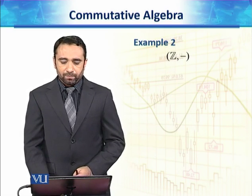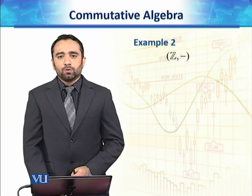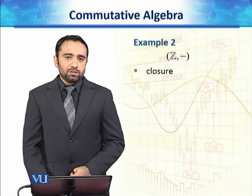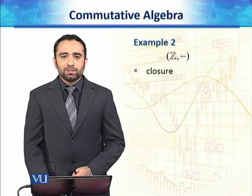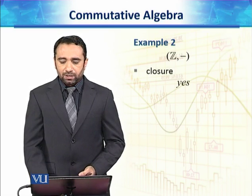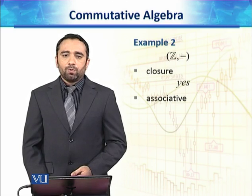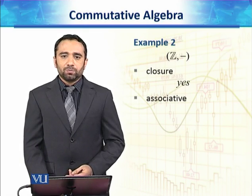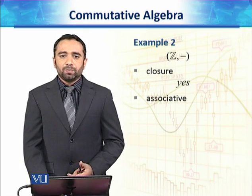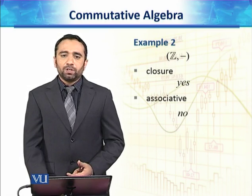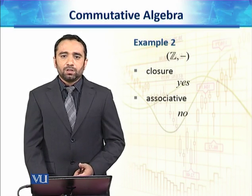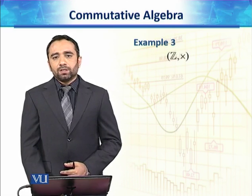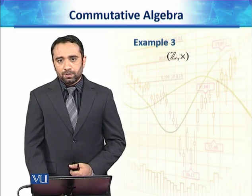What about Z under subtraction? Closure holds — subtracting two integers gives an integer. However, associativity does not hold for subtraction, because changing brackets can change the answer. Since the associative property fails, we do not need to check further axioms. Therefore, Z is not a group under subtraction.